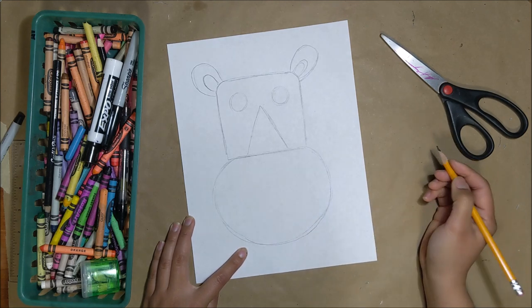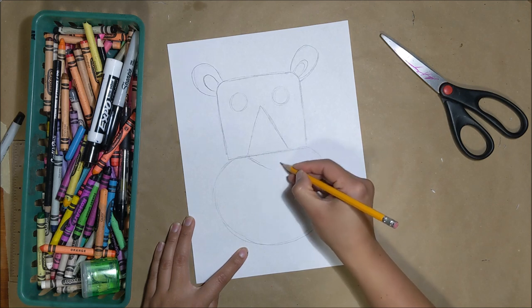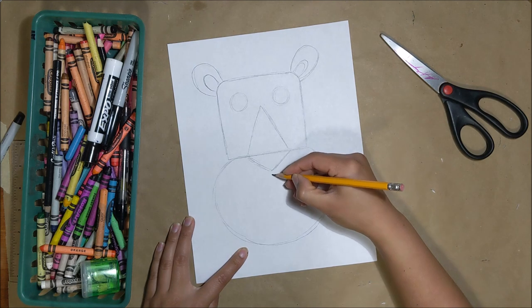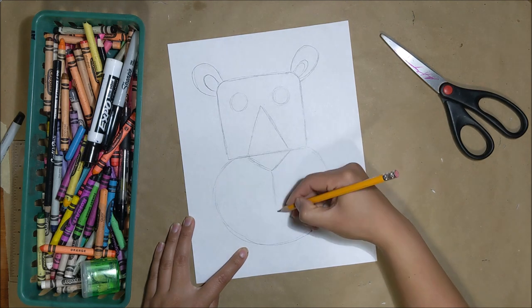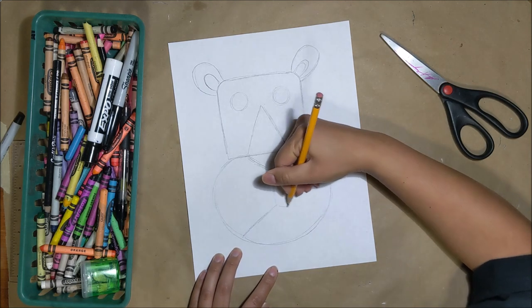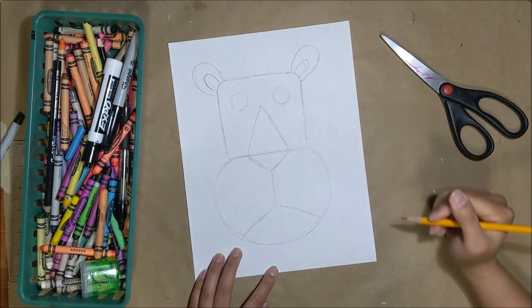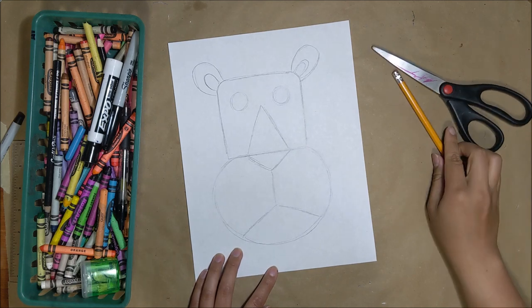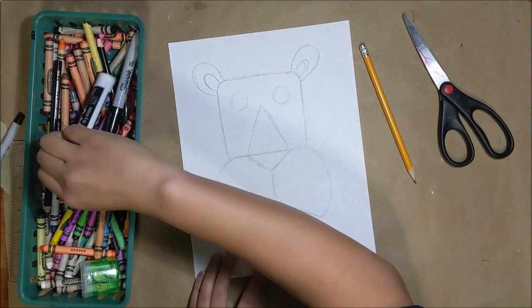For the lion's nose we are going to create a triangle right below that larger triangle. And then adding our Y line for the mouth of the lion. So one vertical line down and then two diagonal lines going to the edge of our oval.